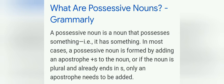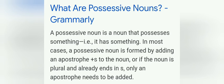In most cases, a possessive noun is formed by adding an apostrophe plus S to the noun. Or, if the noun is plural — and a noun names a person, place, thing, idea, quality, or action — a possessive noun shows ownership by adding an apostrophe and S. By adding S, it shows that the thing belongs to them.